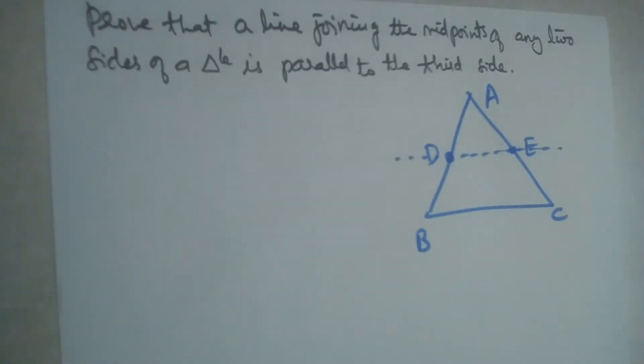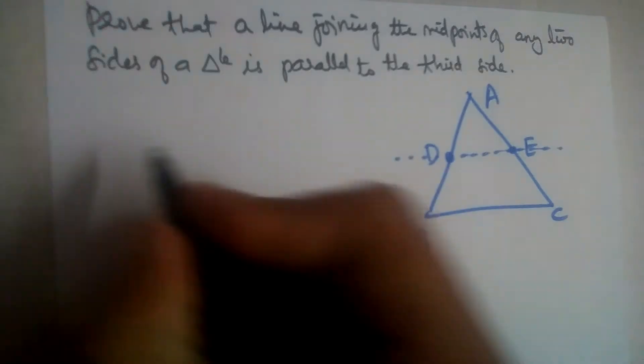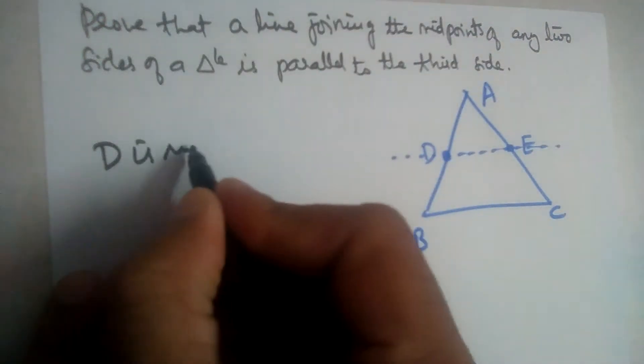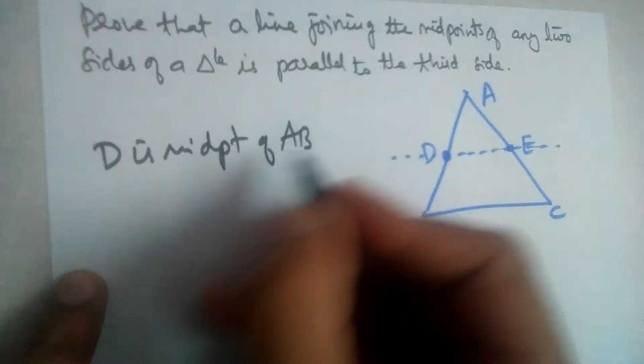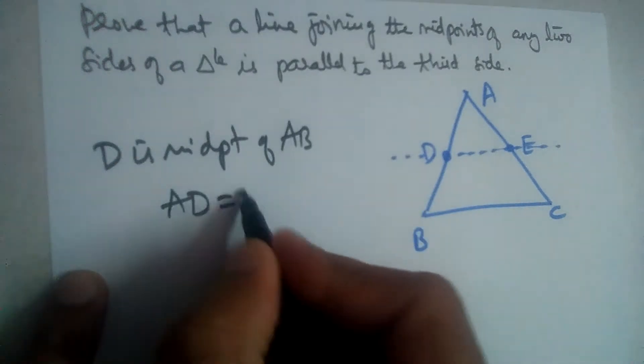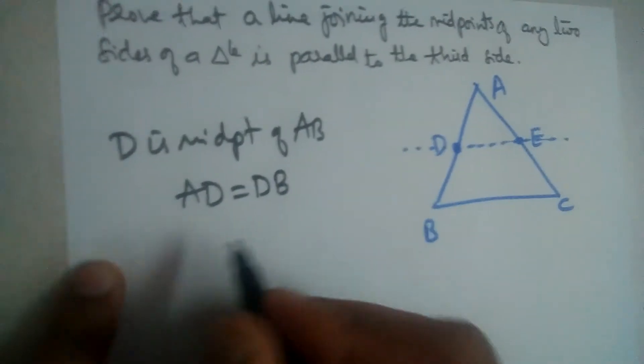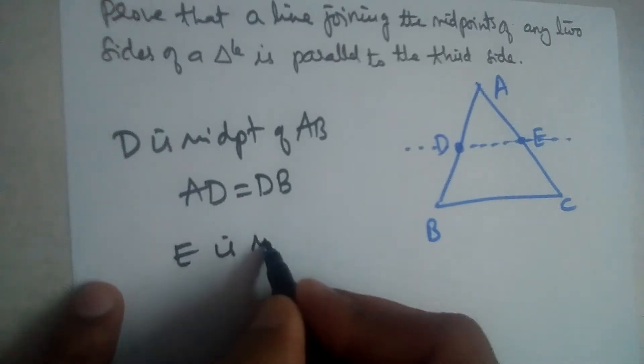So D is midpoint of AB, isn't it? That means AD will be equal to DB. And E is midpoint of AC.